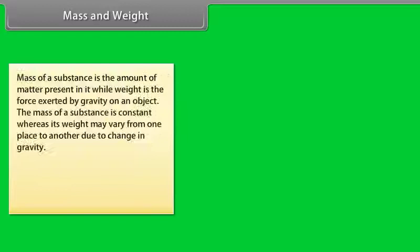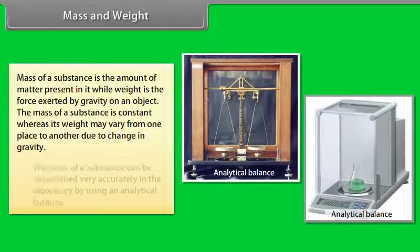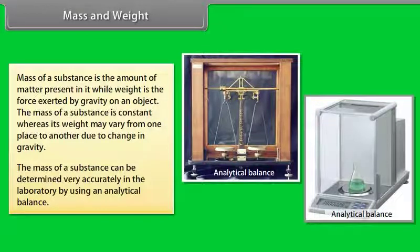Mass of a substance is the amount of matter present in it while weight is the force exerted by gravity on an object. The mass of a substance is constant, whereas its weight may vary from one place to another due to change in gravity. The mass of a substance can be determined very accurately in the laboratory by using an analytical balance.